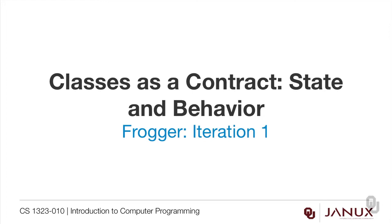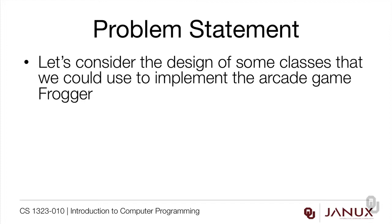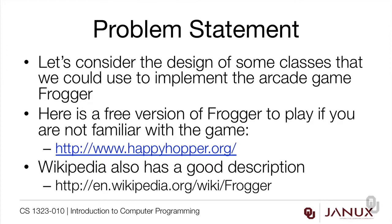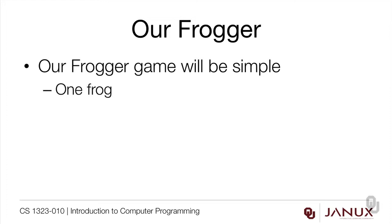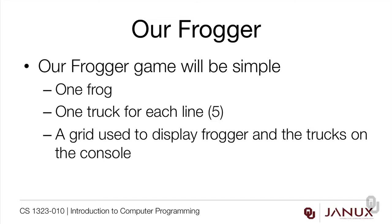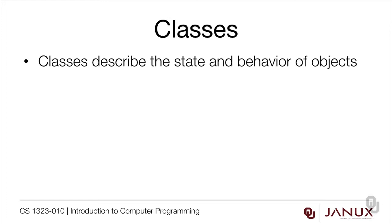Let's continue our study of classes as a contract by looking at the game Frogger. Here's our problem statement: let's consider the design of some classes we could use to implement the arcade game Frogger. Our Frogger is going to be simple — we'll have one frog, one truck for each line for a total of five trucks, and a grid to display the frog and trucks on the console. When we assemble these things, we need to think about what classes we'll need and what a class really means.